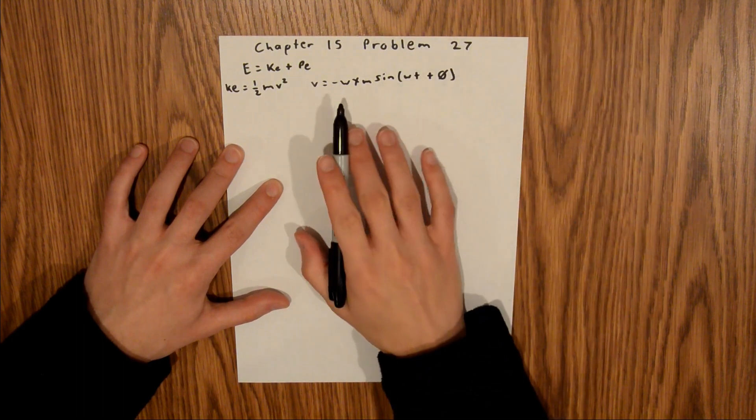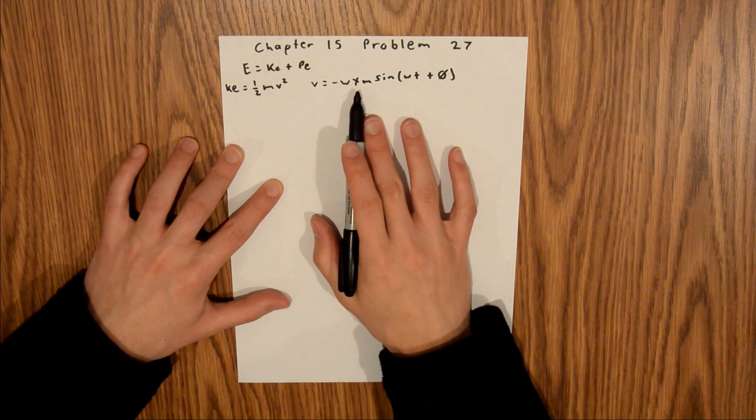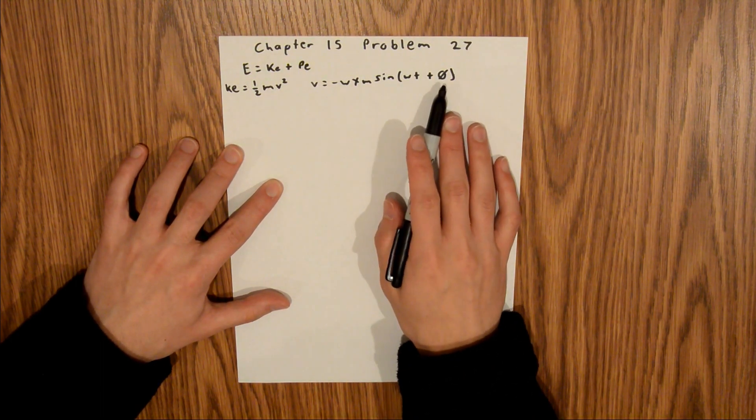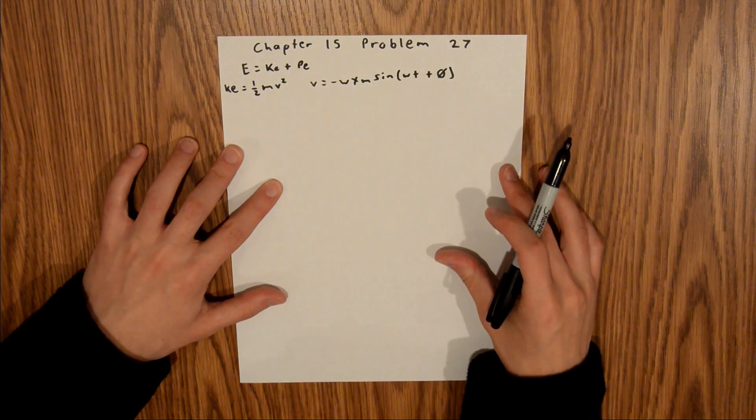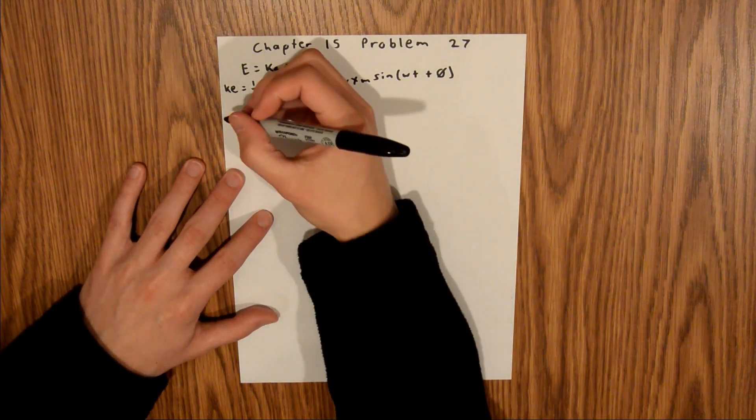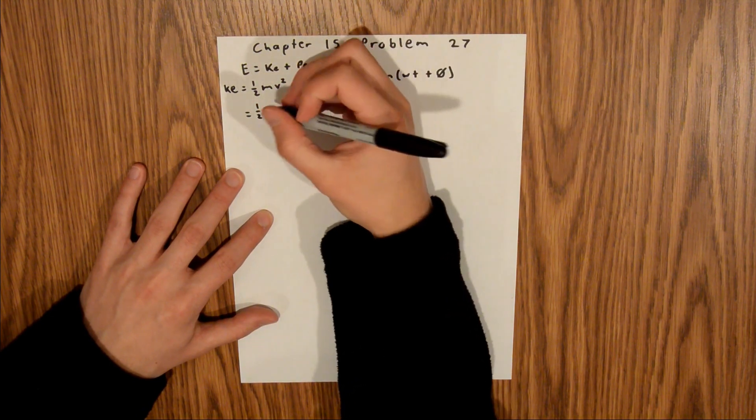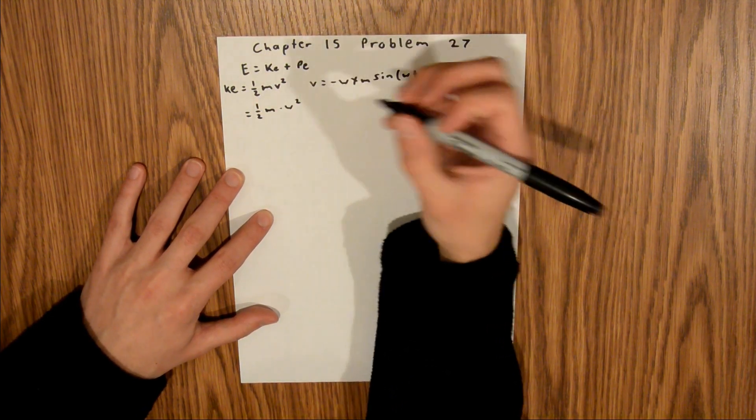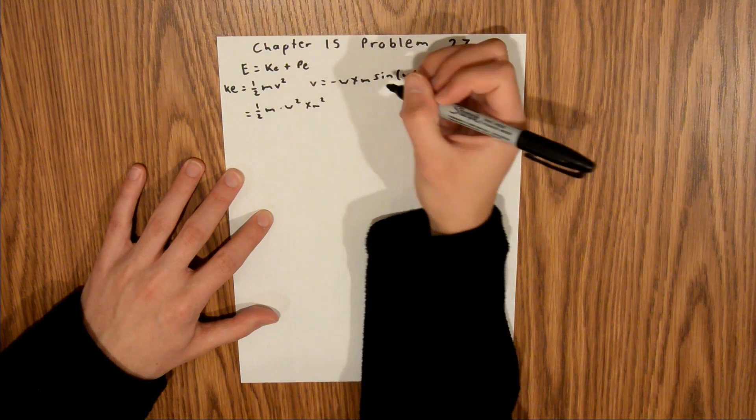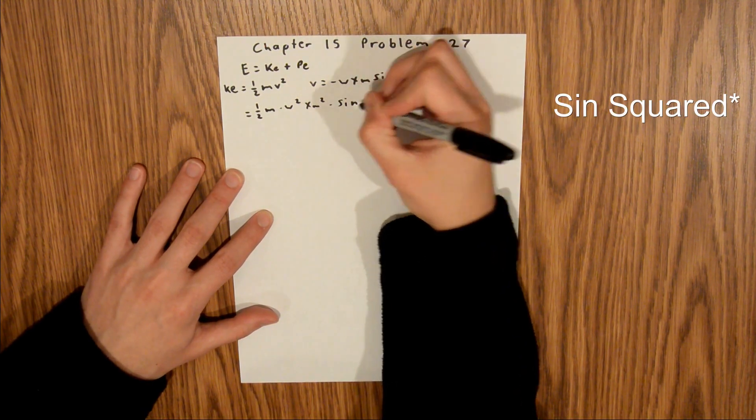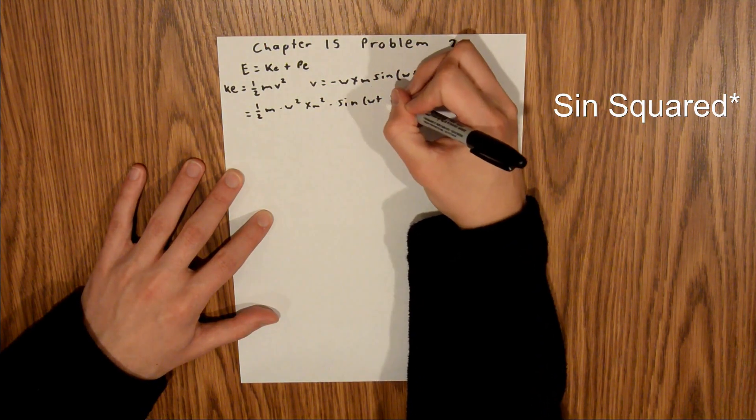And in this right here, we have our angular frequency, amplitude, time, and phase shift. And so we can plug that into here. And so we have 1 half m times omega squared xm squared times the sine of omega t plus phi squared.